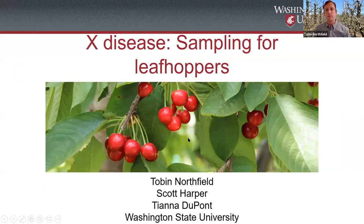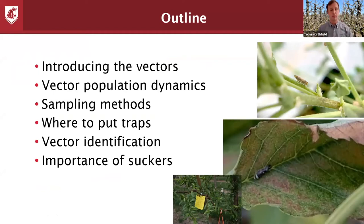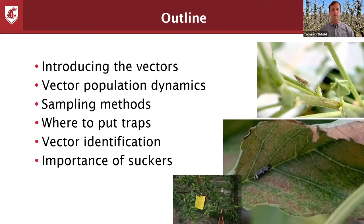I'll talk about X disease and sampling for the leafhoppers that vector it. I'll introduce some of these vectors, discuss vector population dynamics — when you can expect to find these leafhoppers — some sampling methods, what's the best way of collecting or observing them, where to put those traps, because trapping is the most effective and efficient method for monitoring them, and some vector identification, because it doesn't help you to trap them if you don't know what you're looking for.